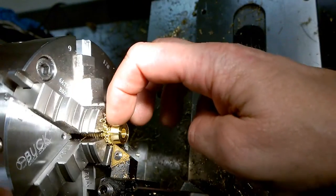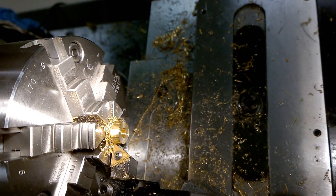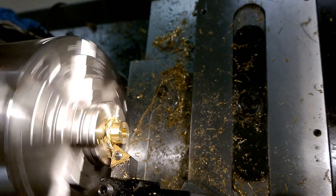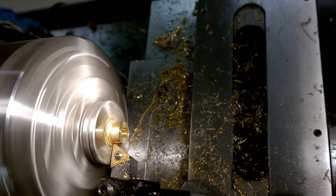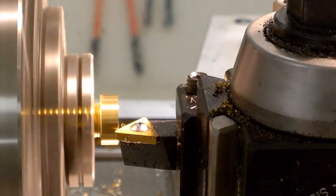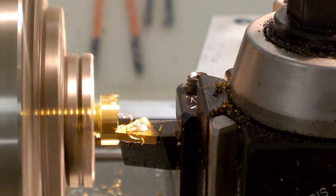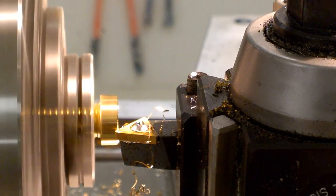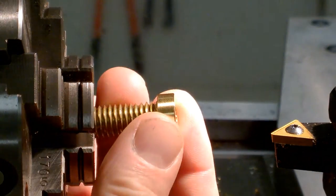After turning and facing, the part has a razor sharp edge. I remove this edge by chamfering it with the side of the cutter. The part is now ready for drilling and tapping for the set screws.